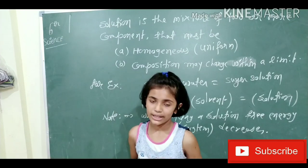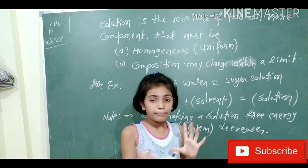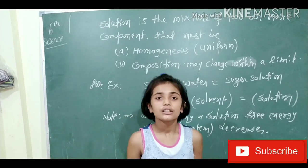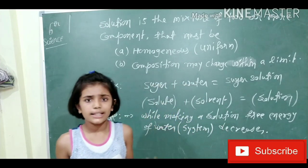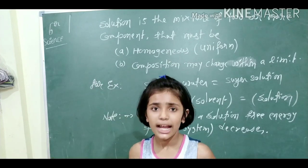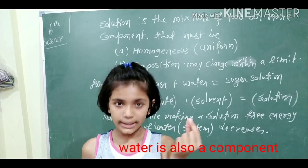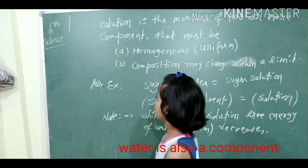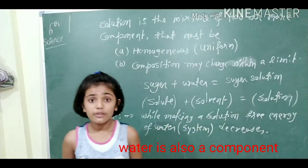So what are components? Components are things that we need and mix together. Like sugar is a component, salt is a component, haldi is a component, chilli is a component — these are all components. Tea leaves are also a component, which we use to make tea.